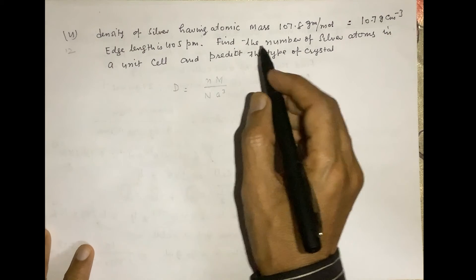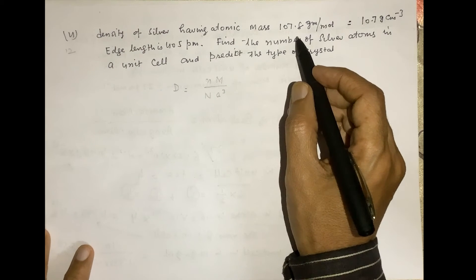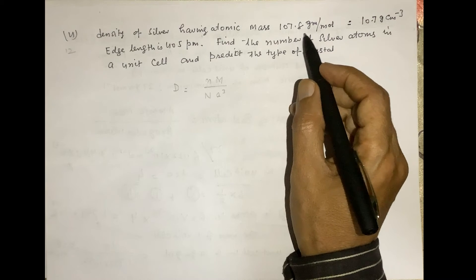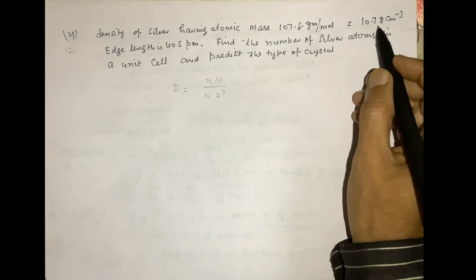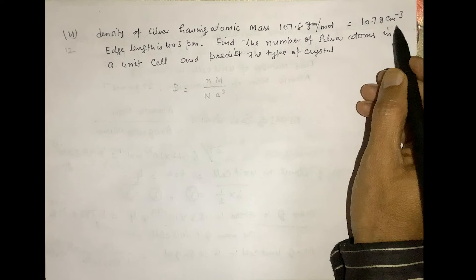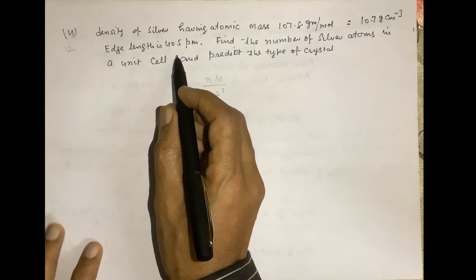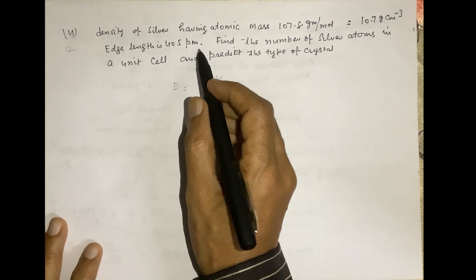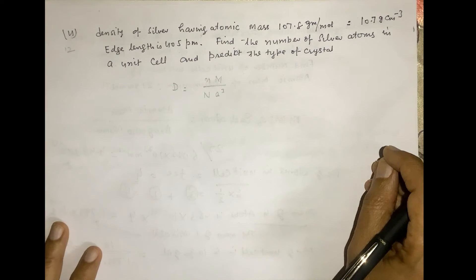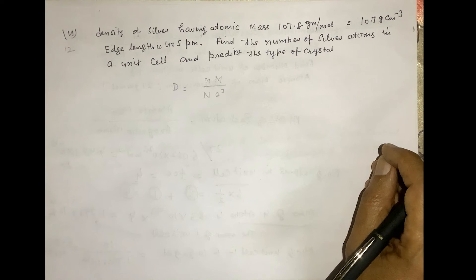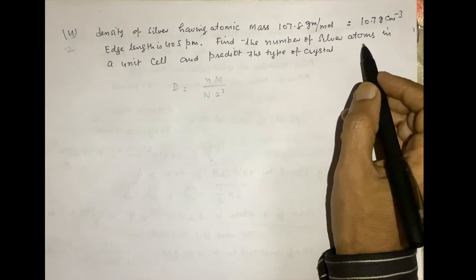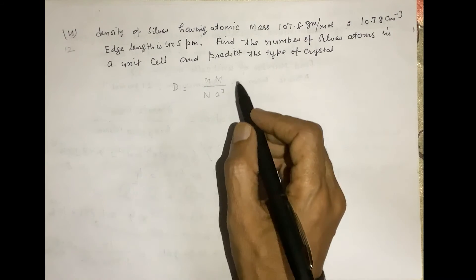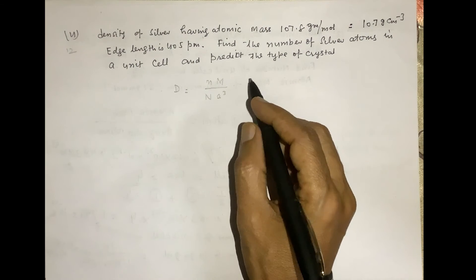Now, the density of silver: atomic mass is 107.8 g/mol, density is 10.7 g/cm³, and edge length is 405 picometers, which converts to 405 × 10⁻¹² meters or 4.05 × 10⁻⁸ cm. Find the number of silver atoms in a unit cell and predict the type of crystal structure.